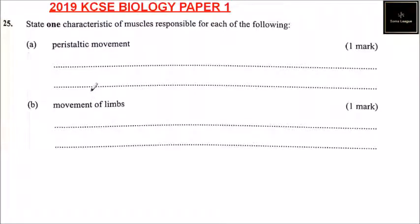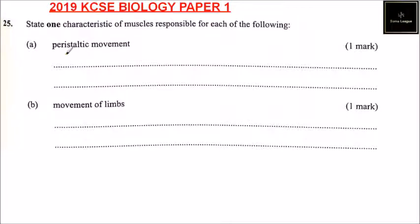Question number 25: state one characteristic of muscle responsible for each of the following. Part A is peristaltic movement — this is the movement that helps to push food down the esophagus. So we say it is spindle-shaped.